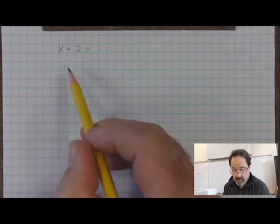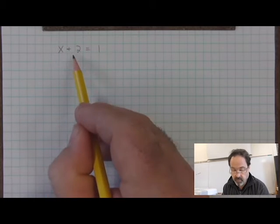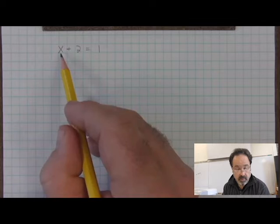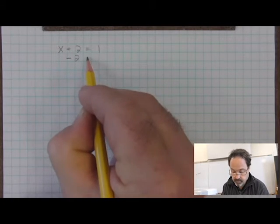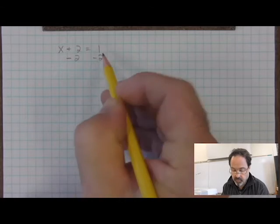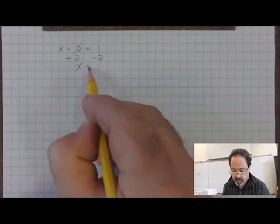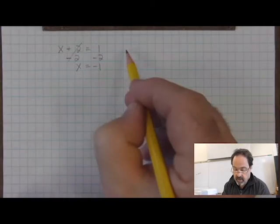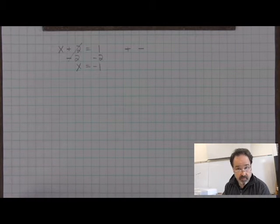For example, if we had the equation x plus 2 is equal to 1, we need to undo the addition of 2 to get x by itself. The inverse operation to addition is subtraction. So if we subtract 2 from both sides, they will cancel out, leaving x by itself. We can evaluate the right side. Addition and subtraction are inverses of each other because they cancel each other out, or they undo each other.